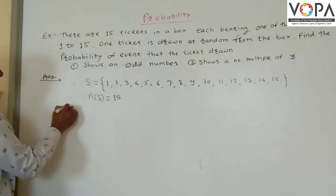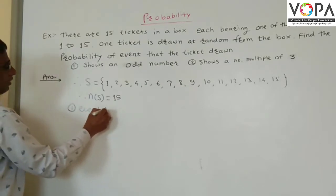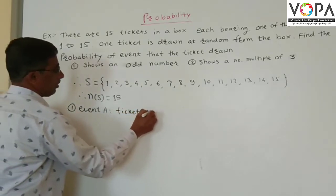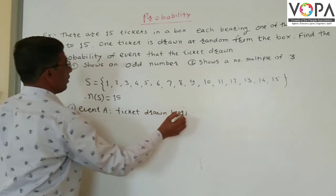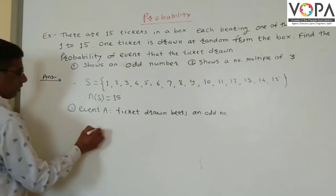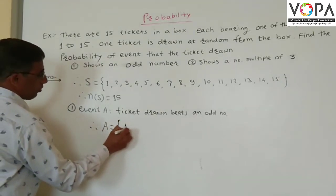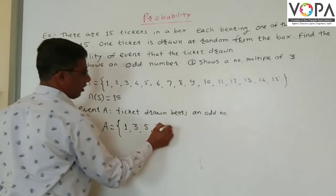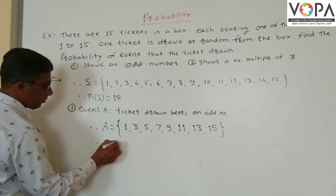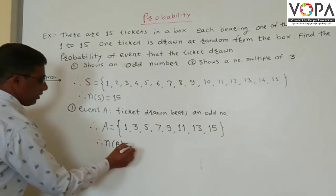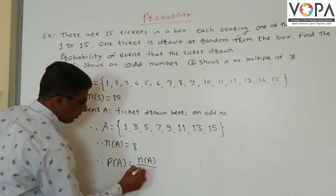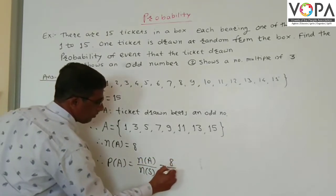First, shows an odd number. Let event A be that a ticket drawn bears an odd number. Therefore, event A is equal to {1, 3, 5, 7, 9, 11, 13, 15}. Therefore, N of A is equal to 8. Now, probability of A is equal to N of A upon N of S, which is 8 upon 15.